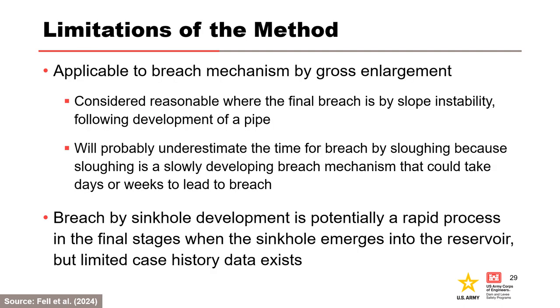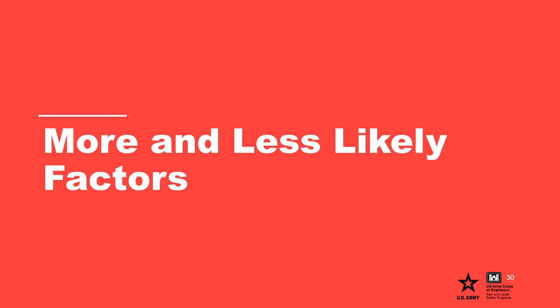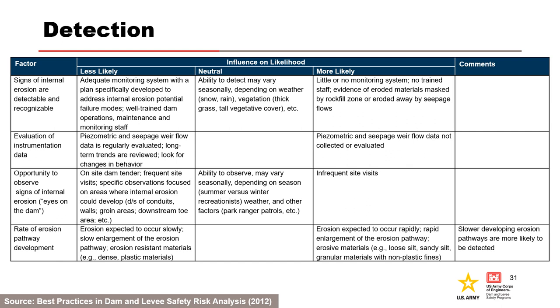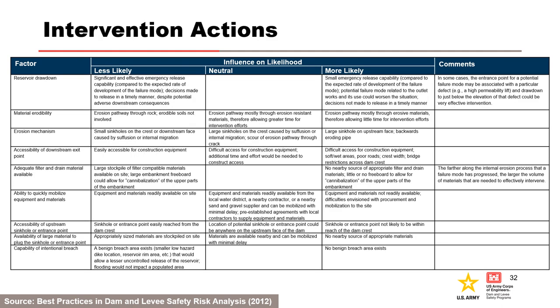The limitations of the approximate method are that most case studies were for breach by gross enlargement, so the method is only applicable to cases where the breach mechanism is gross enlargement. It will likely underestimate the time for breach by sloughing, since breach by sloughing is a slowly developing mechanism that could take days to weeks. A table from the best practices manual can be used to help assess the likelihood of unsuccessful detection and intervention; it serves as a starting point, but the risk team must develop project-specific more-likely and less-likely factors. The table addresses both detection factors and physical intervention action factors.